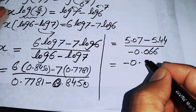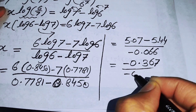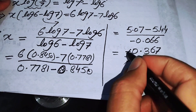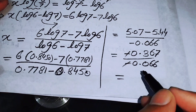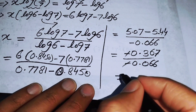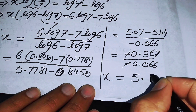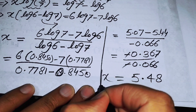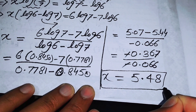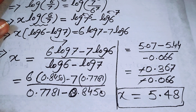In the numerator we get negative 0.367, and in the denominator we subtract the two log values to get negative 0.066. The negatives cancel out, and when we divide we finally get x equals approximately 5.48. Thank you so much for watching this video — please subscribe to my channel for more exciting videos.